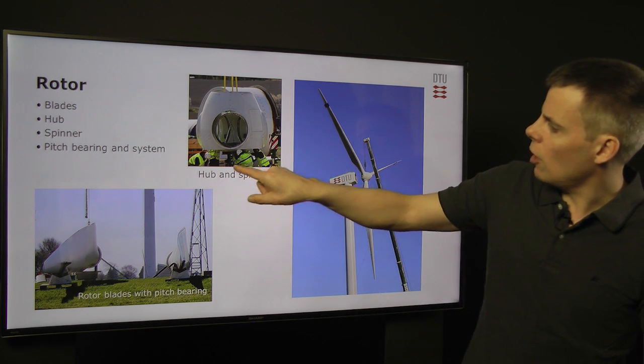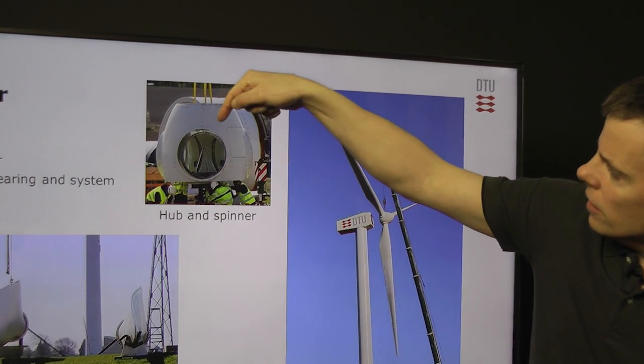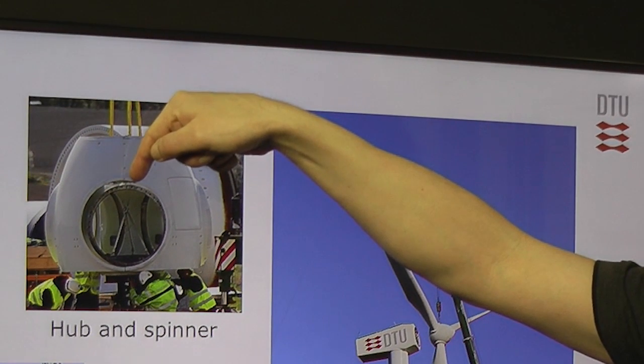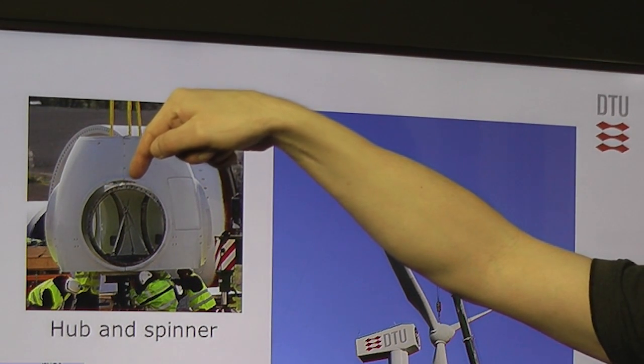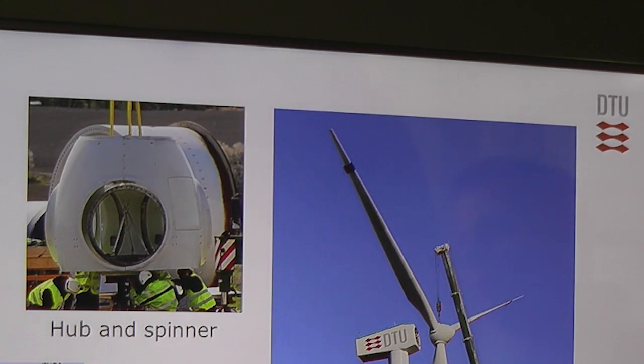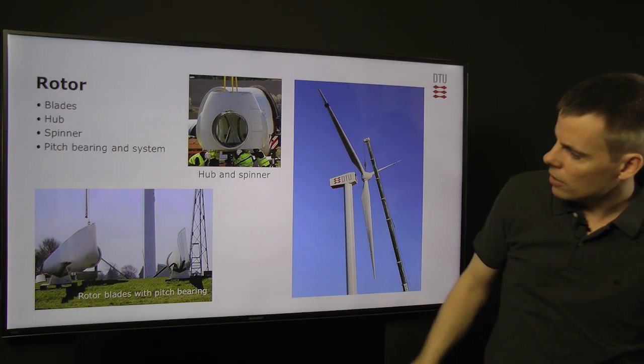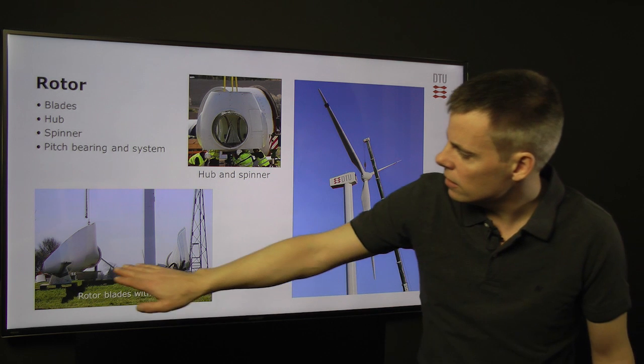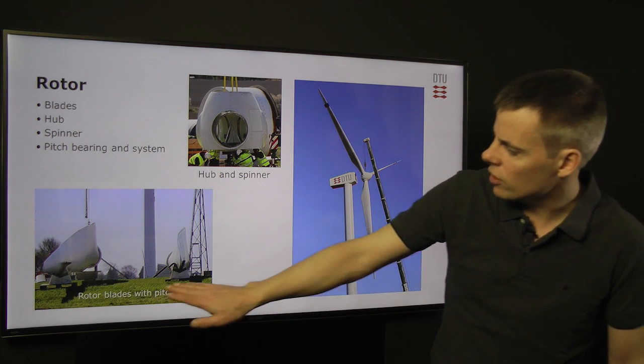Here we see a picture of a hub and a spinner. You can see the hub behind the spinner, the metal part, and outside a typical glass fiber plastic hub. And then we have the blades here on the ground.